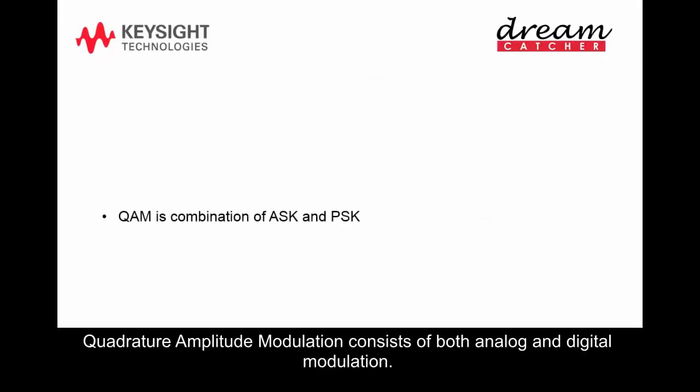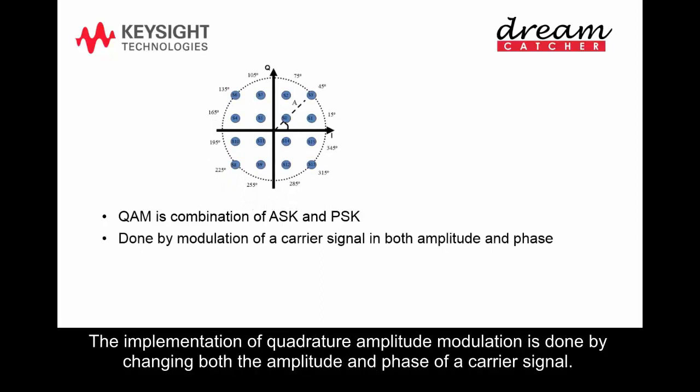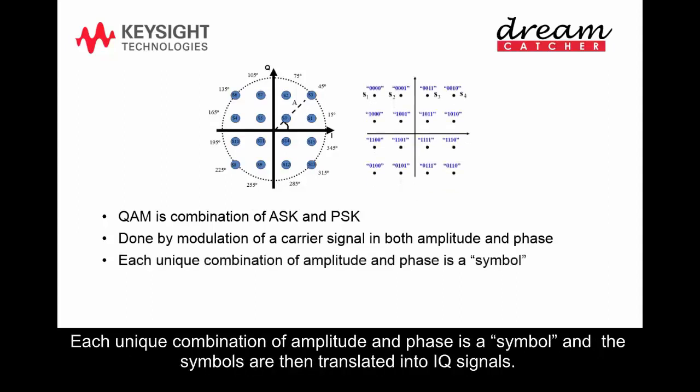Quadrature amplitude modulation consists of both analog and digital modulation. It combines amplitude shift keying and phase shift keying in such a way that maximum contrast between each bit is achieved. The implementation of QAM is done by changing both the amplitude and phase of a carrier signal. Each unique combination of amplitude and phase is a symbol, and the symbols are then translated into IQ signals.